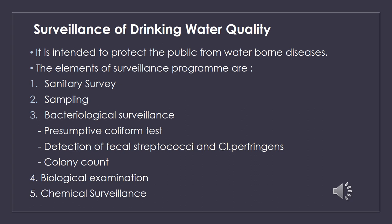The aim of surveillance of drinking water quality is to protect the public from waterborne diseases. The elements of a surveillance program include sanitary surveys, sampling, bacteriological surveillance (including identification of the presumptive coliform test, detection of fecal streptococci and Clostridium perfringens, and colony count), biological examination, and chemical surveillance.